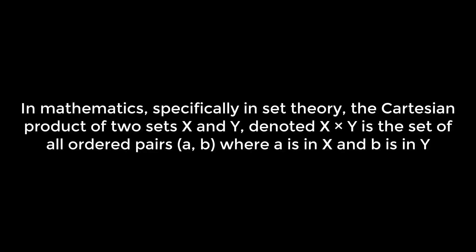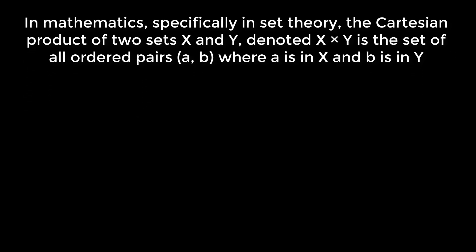In mathematics, specifically in set theory, the Cartesian product of two sets X and Y, denoted by X cross Y, is the set of all ordered pairs where A is in X and B is in Y. If we express the set using properties — that means using the set-builder method — then X cross Y is the set of (A,B) such that A belongs to X and B belongs to Y.